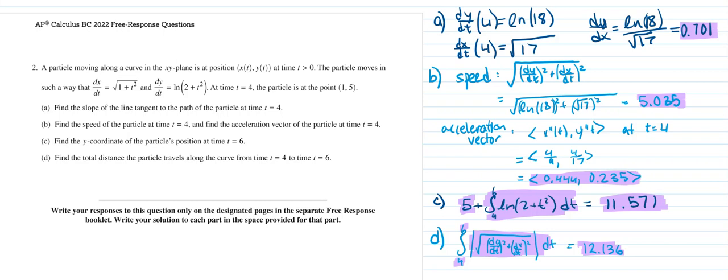This is free response number two on the 2022 AP Calculus exam, a calculator question. The problem states: a particle moving along a curve in the xy plane is at position (x(t), y(t)) at time t greater than zero. The particle moves such that dx/dt equals square root of 1 plus t squared, and dy/dt equals ln of 2 plus t squared. At time equals 4, the particle is at the point (1, 5).